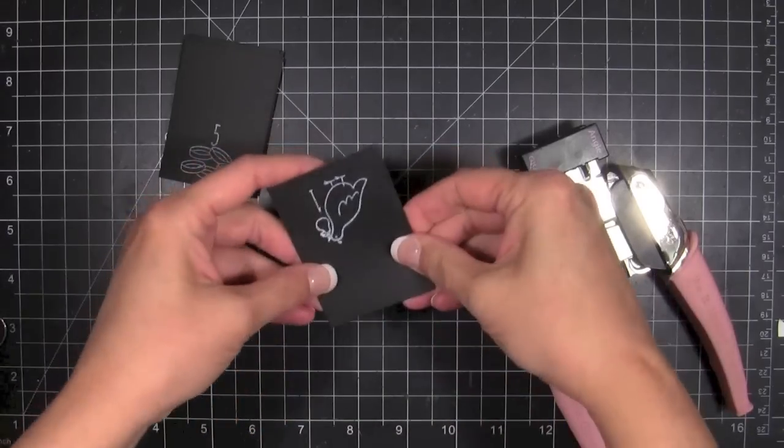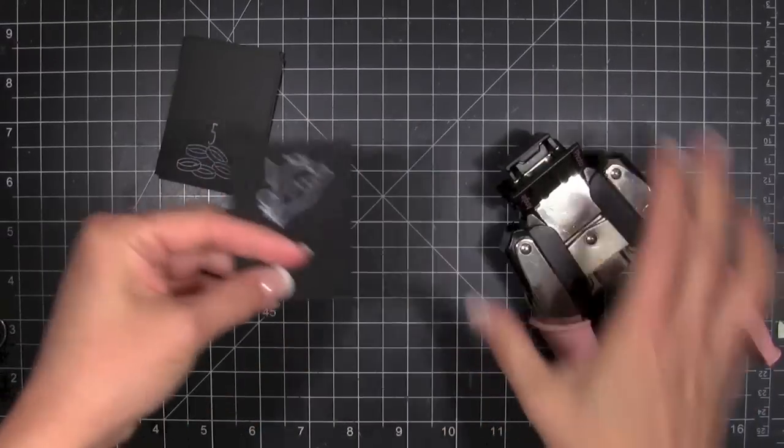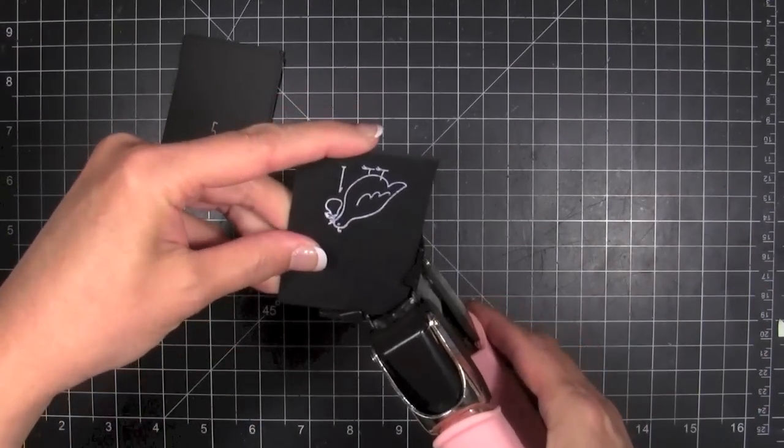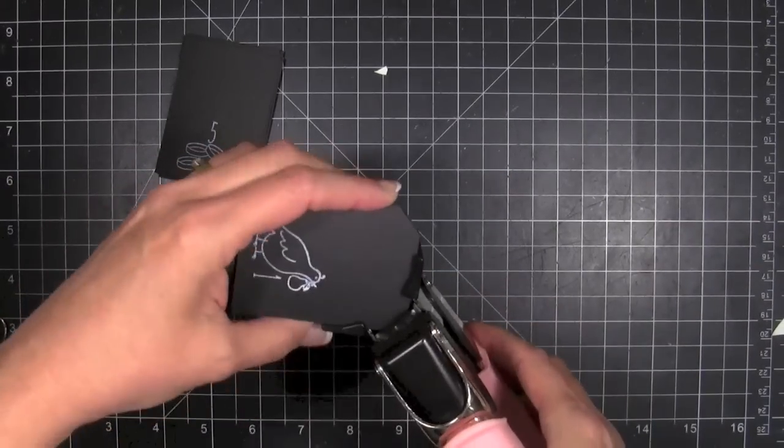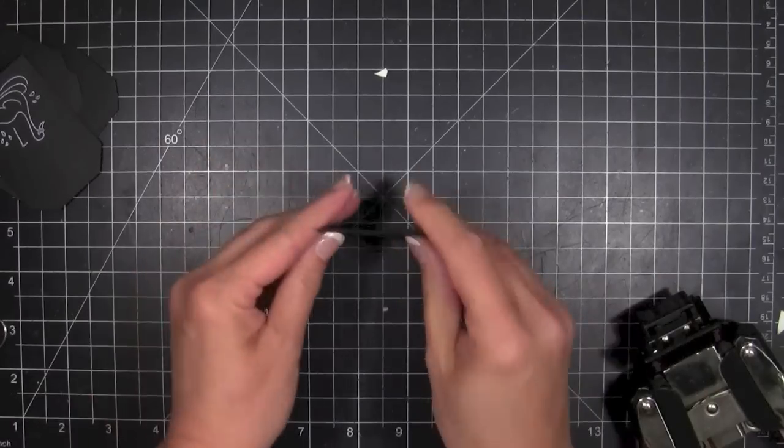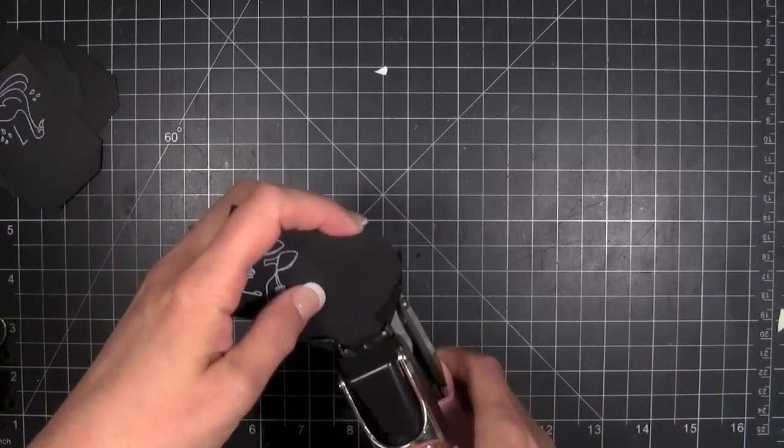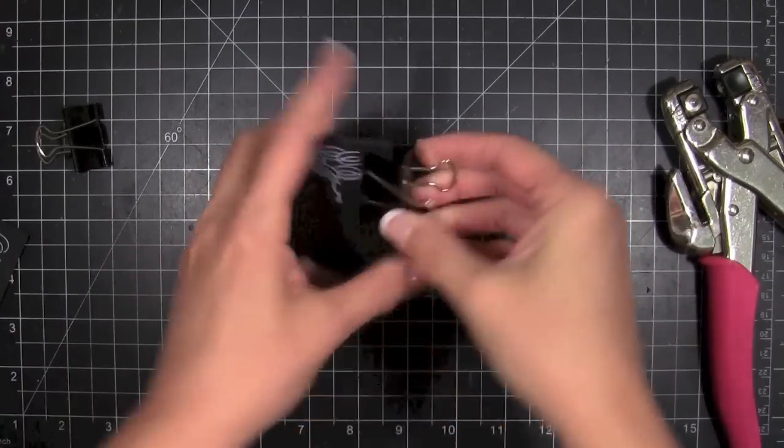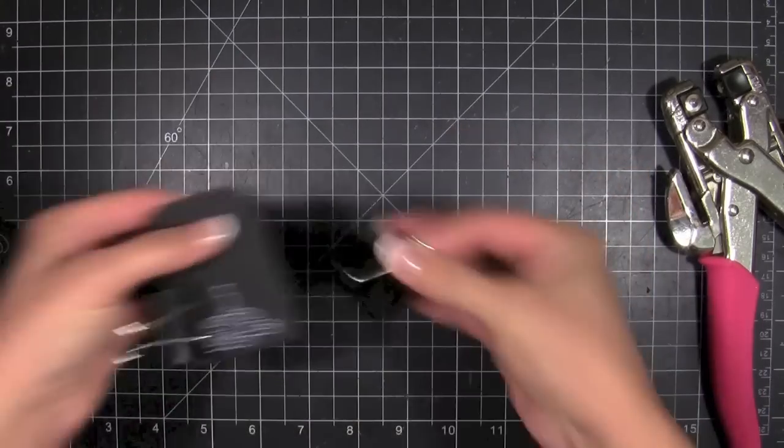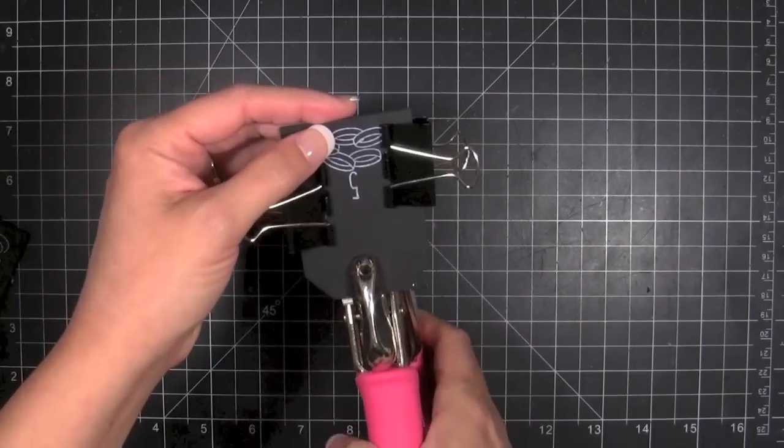I've already pre-cut my licorice cardstock into this size for tags, and to create the shipping tag effect I'm going to use my corner chomper tool that has the angle cut. I'm just going to stack them up and nest them into the corner guides there on the tool. My corner chomper has seen better days, so it doesn't cut quite as many layers as a brand new one would, but it'll cut through about three layers at a time. These things are strong; they can even cut through chipboard.